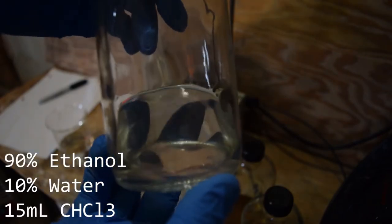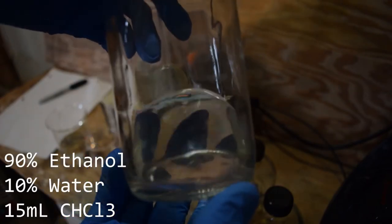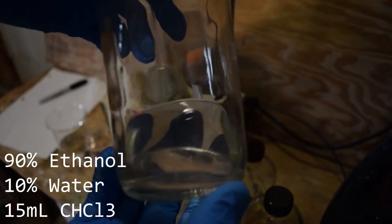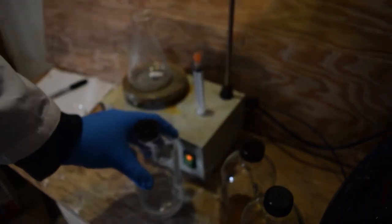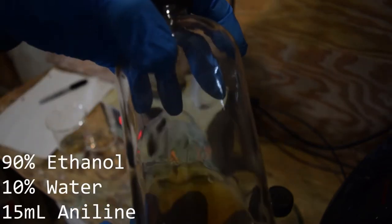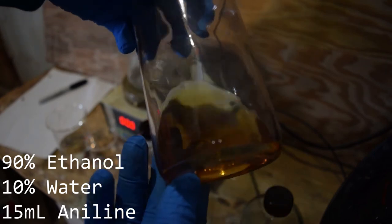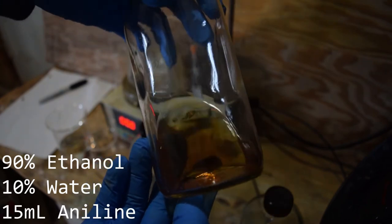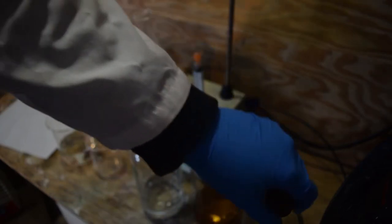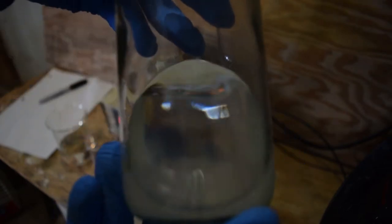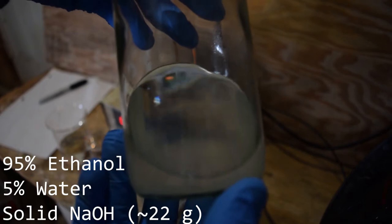This is a mixture which is in a 90:10 proportion of ethanol to water which has 15 milliliters of chloroform or trichloromethane dissolved in it. This is the same type of 90:10 mixture of ethanol and water but has 15 milliliters of aniline or aminobenzene dissolved in it. And finally, the solution of sodium hydroxide in ethanol.